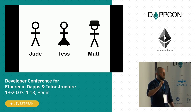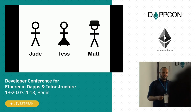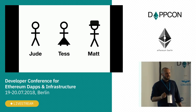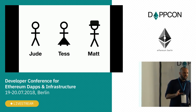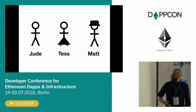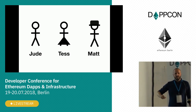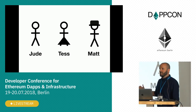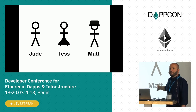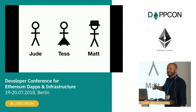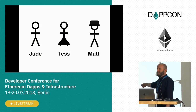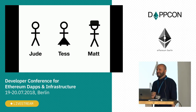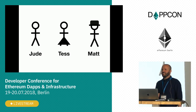In order to explain payment channels and state channels, I'm going to introduce some new friends. It's customary to use Alice and Bob in these situations but I figure they could do with some time off. So I've introduced three new characters. I've tried to make the names easy to remember: here's Matt - Matt in the hat. How do you remember that one's Tess? And how do you remember this one's Jude? Jude's in the nude.